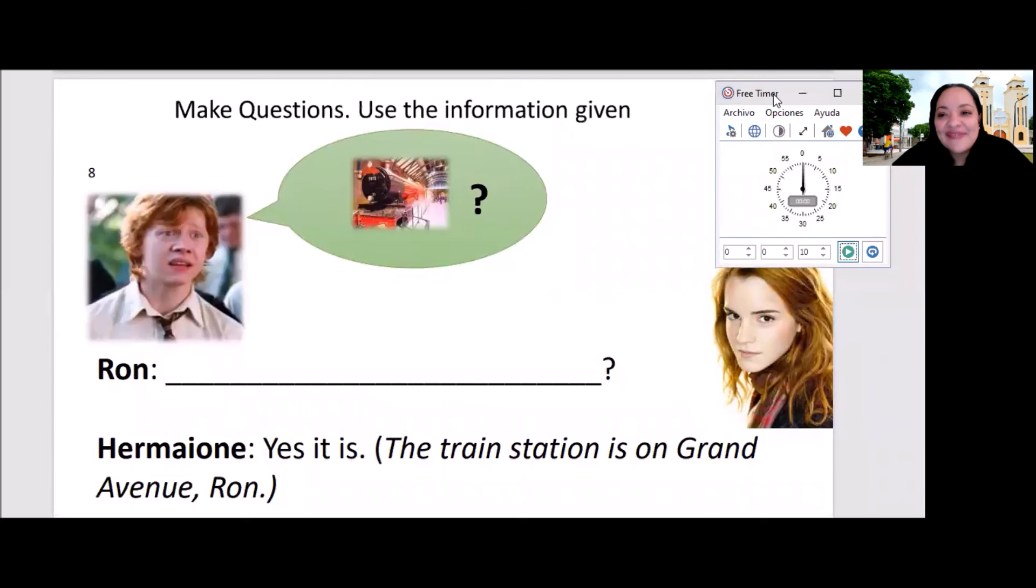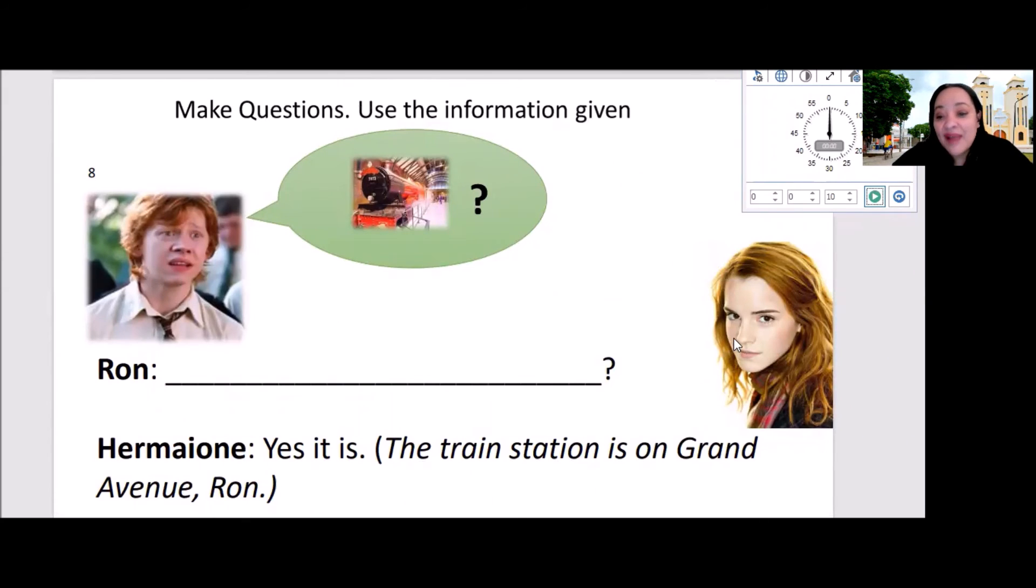Number eight. We have Ron and Hermione. So, Ron makes a question and she answers, Yes, it is. The train station is on Grand Avenue. So, what was the question? Ready? Go. Good. So, the question is, Is the train station on Grand Avenue? And the answer is, Yes, it is. Very good.